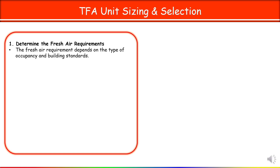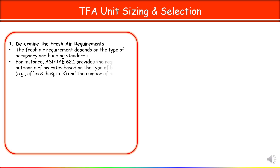The fresh air requirements generally depend on the type of occupancy and building standards. For instance, ASHRAE 62.1 provides the required outdoor air flow rate based on the type of building — for example, offices, hospitals — and the number of occupants.